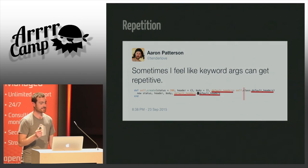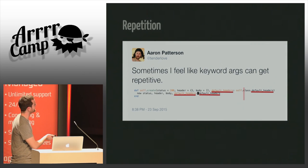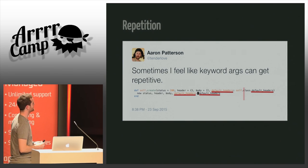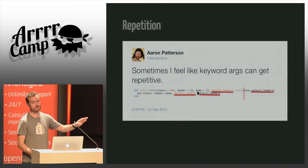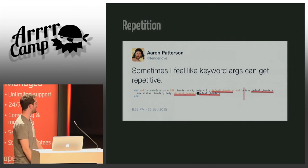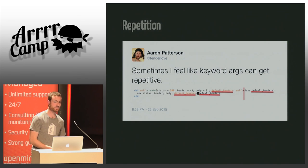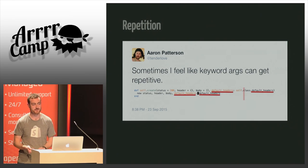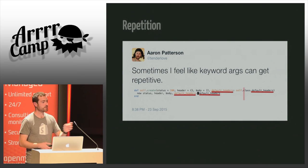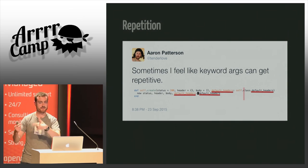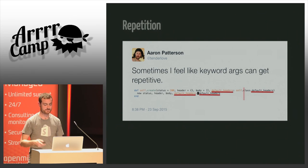An issue with keyword args is that sometimes they can get repetitive. For example, a `create` factory method could just take any number of keyword arguments and pass them on to `new`, removing all this repetition. Sometimes when you start using keyword arguments a lot, you wish Ruby had something similar to ES6 where you can pass arguments straight and it knows you want the same name as the key and value.